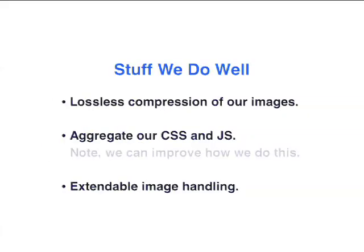We're already doing some stuff well when it comes to front-end performance. Lossless compression of our images — a lot of our images in the MISC directory are already compressed down, because a lot of what's in an image you don't need to ship to devices. And we aggregate our CSS and JavaScript files, which is really good because we include a lot of them, and each one is an HTTP request that can incur performance hits. Our image handling is also extendable — you can cut out metadata inside JPEG images. The ImageMagick module even plugs in and takes advantage of some of this. So we've thought about some of this stuff already, but there is more we can do.